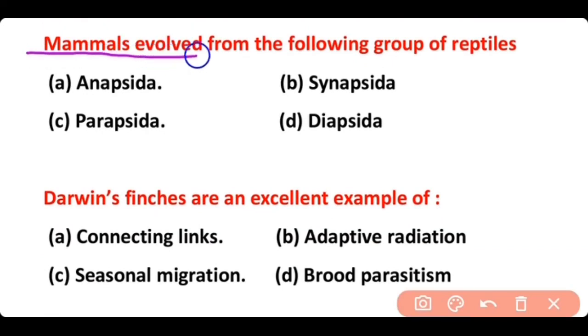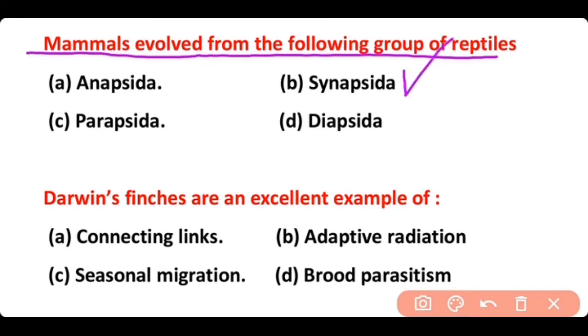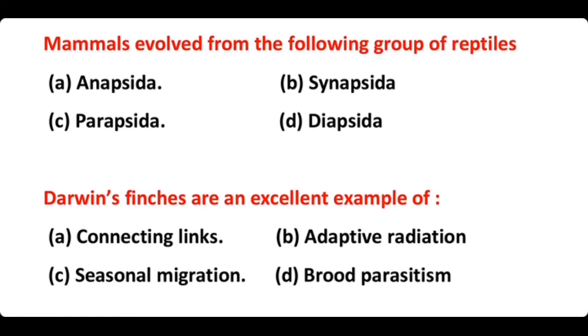Mammals evolved from the following groups of reptiles: anapsida, synapsida, parapsida, or diapsida. The correct answer is option B. Mammals evolved from the synapsid lineage of reptiles.